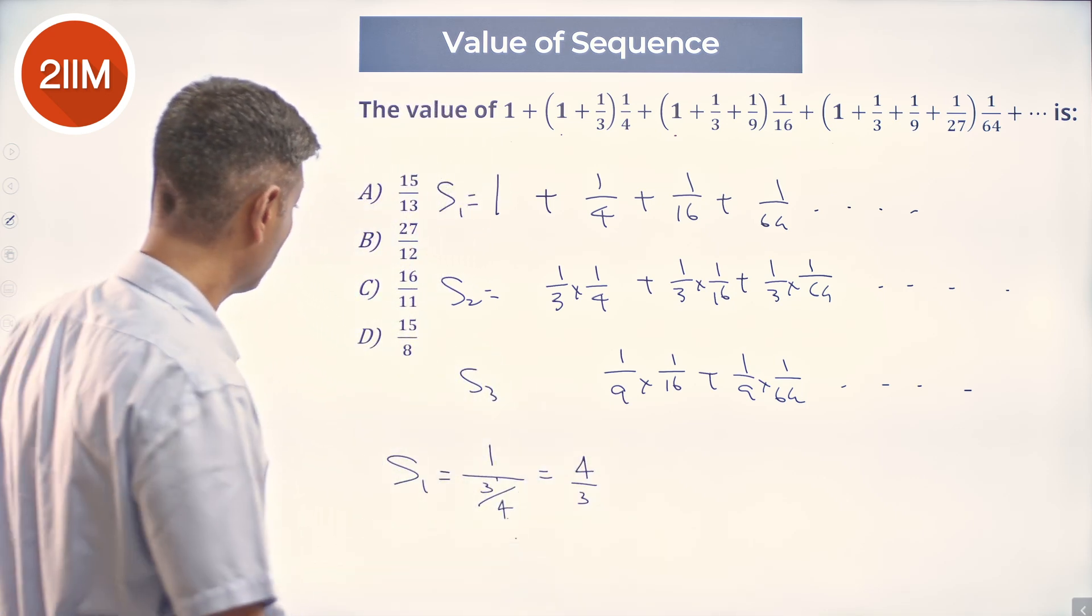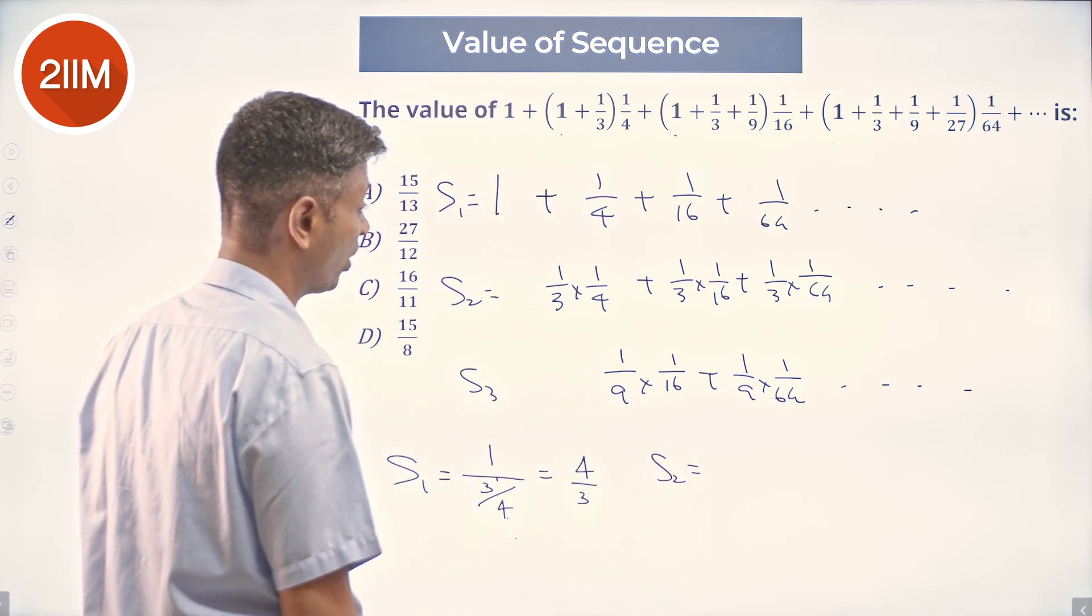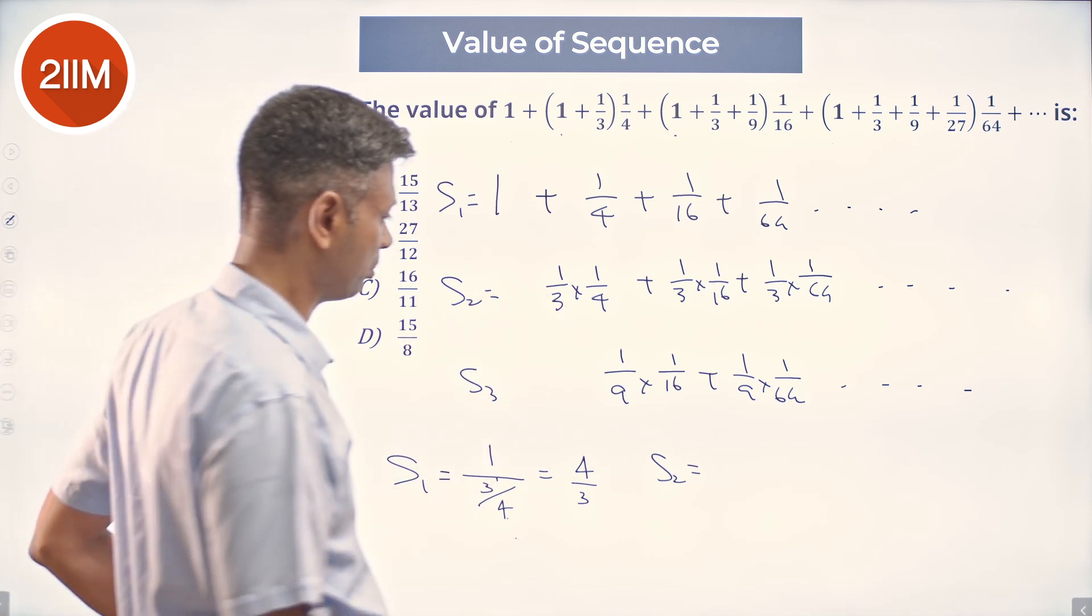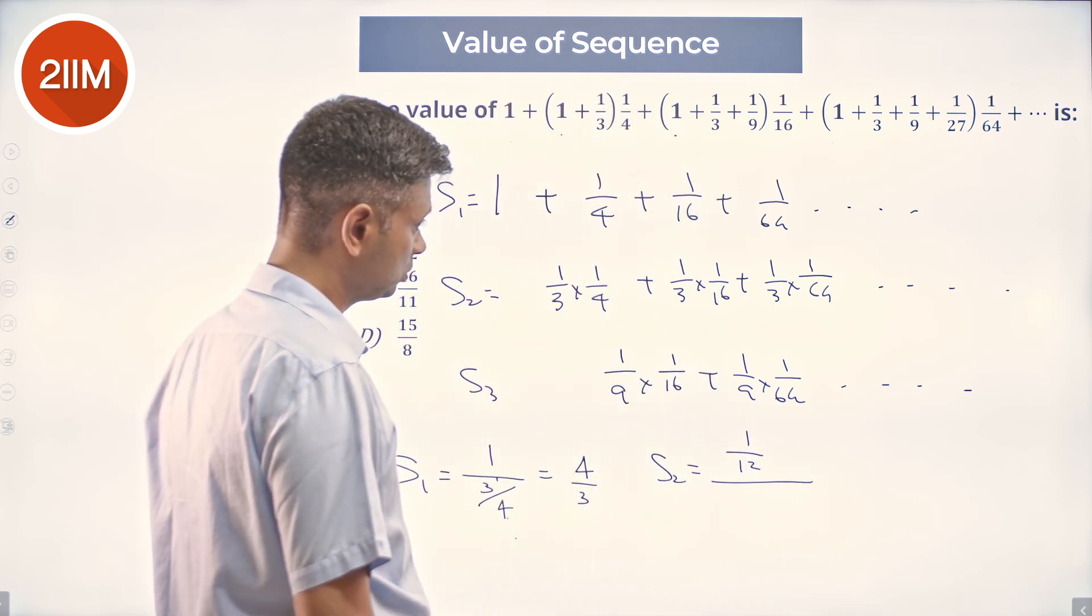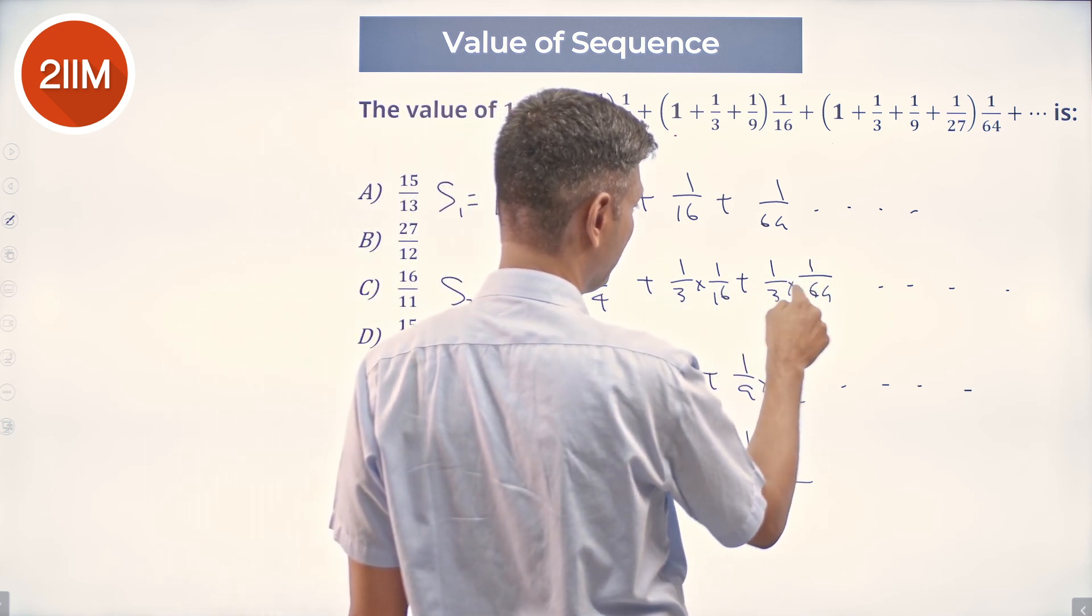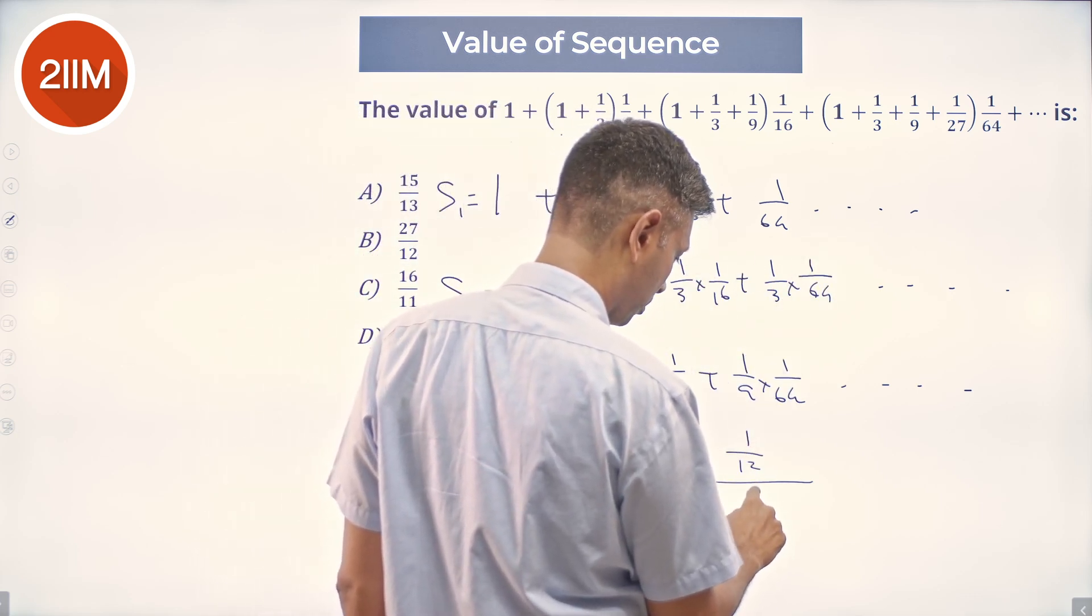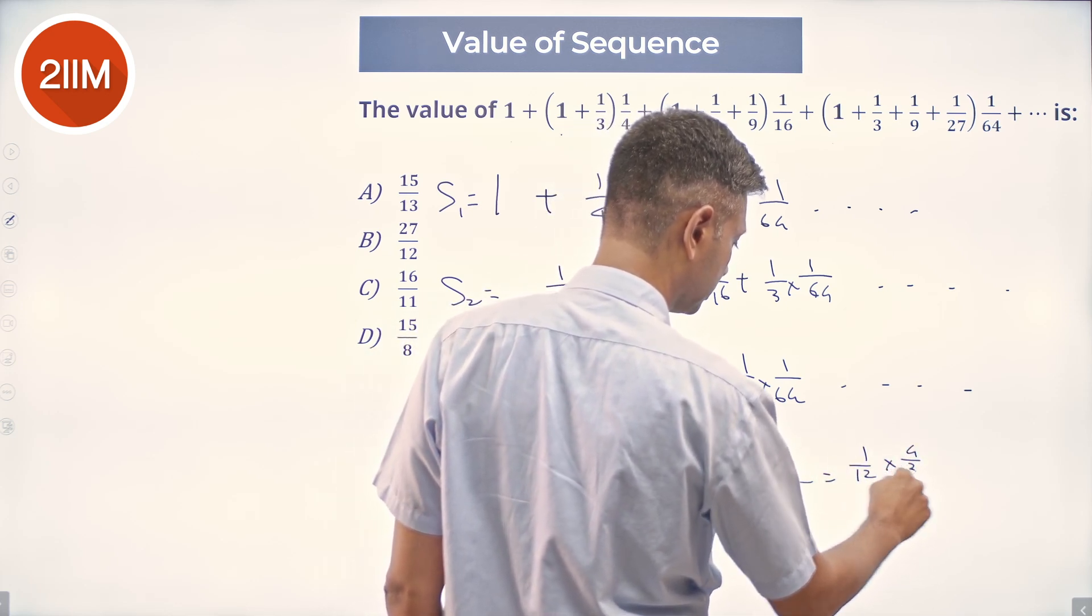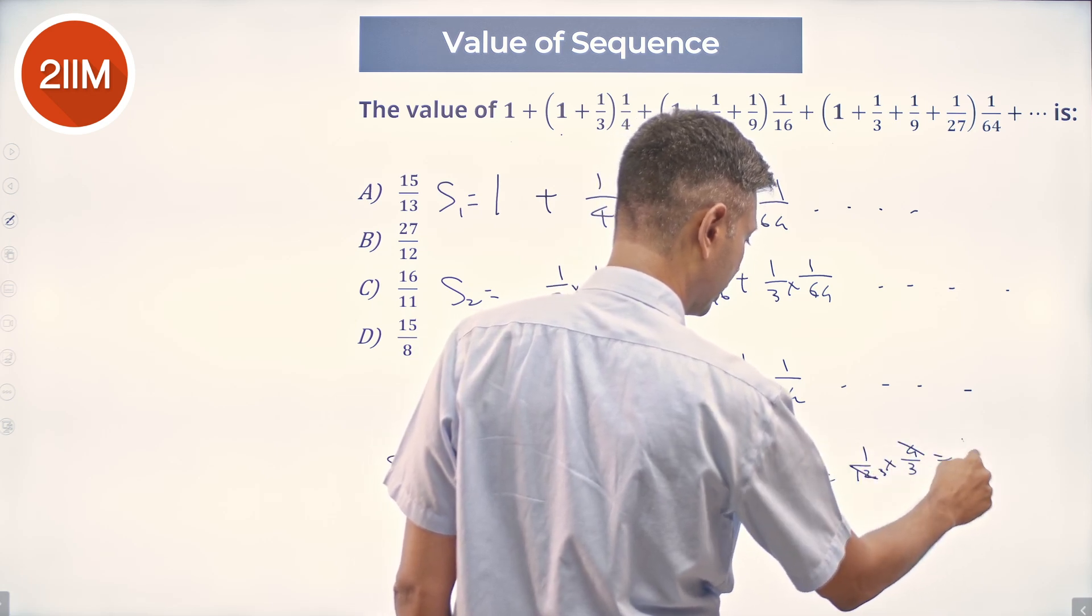Nice. Next, what are we going to do? We're going to say okay, nice, so far so good. Let us do sum 2. The first term is 1/12, which is 1/3 into 1/4. The common ratio again is 1/4. So 4, 16, 64 - the 1/3 remains the same, 4 becomes 16, 16 becomes 64. 1/4 times 1/12 by 3/4 equals 1/12 into 4/3, or 1/9.